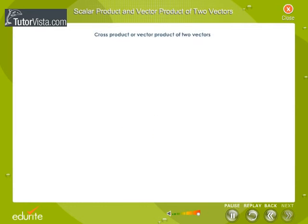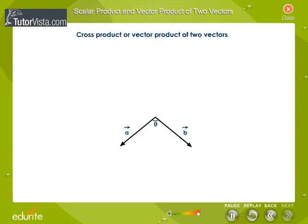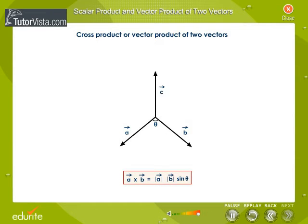Cross product or vector product of two vectors. Let A and B be two vectors and theta be the angle between them. The magnitude of the cross product of vectors A and B is equal to |A| × |B| × sin θ. The cross product of vectors A and B gives a third vector C.